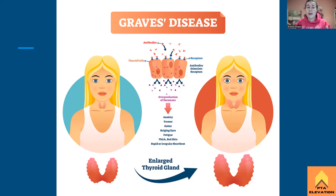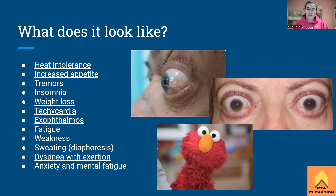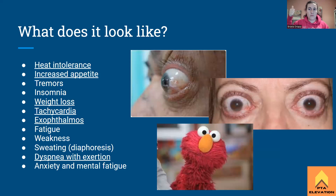We'll also see bulging eyes, called exophthalmos, and a rapid heart rate. It's essentially just go, go, go with this condition. For the boards, what you basically need to know is: hyperthyroidism, increasing metabolic rate, making them hot, anxious, sweating, and tremors. Everything is going through the roof — we're doing too much.